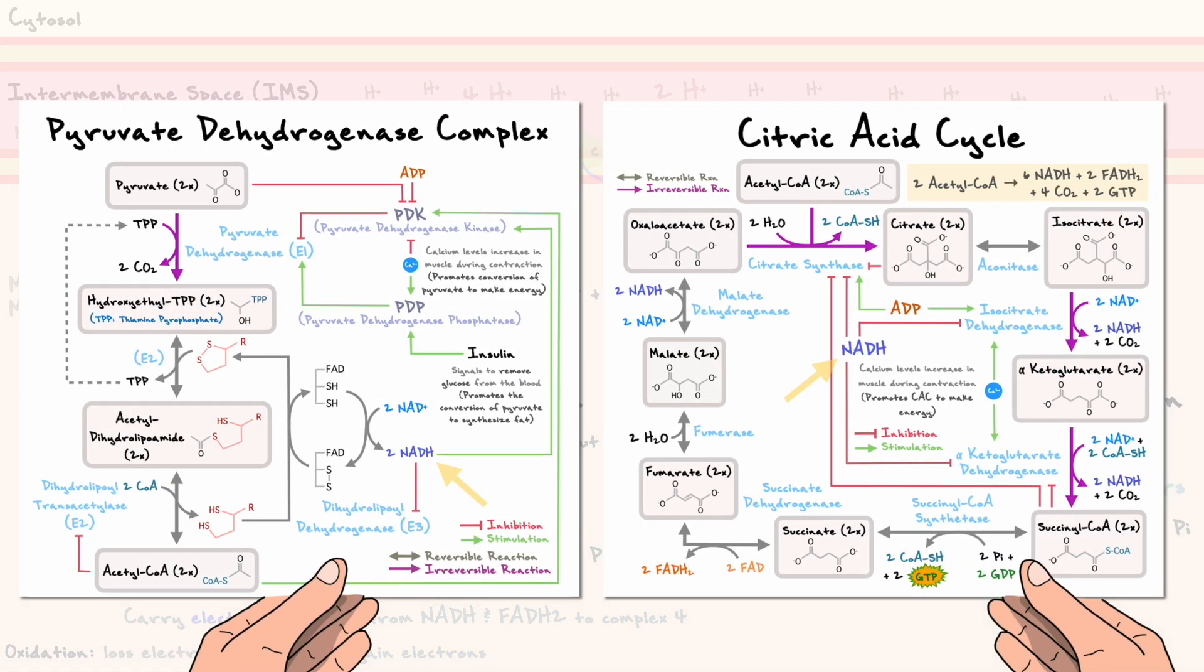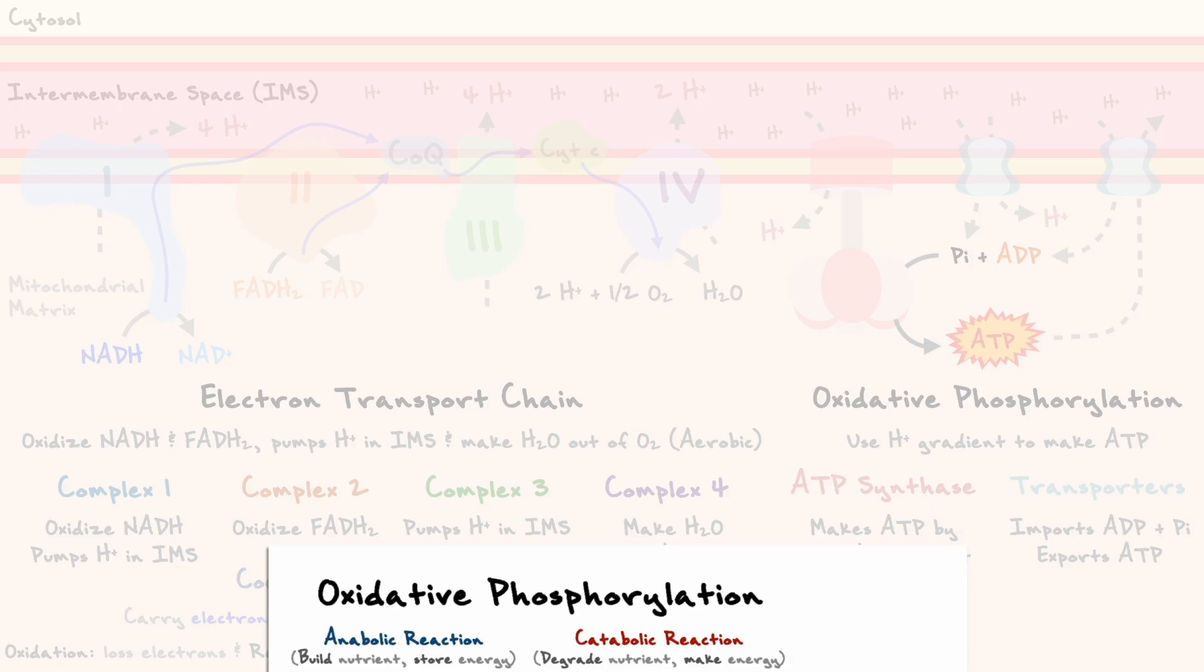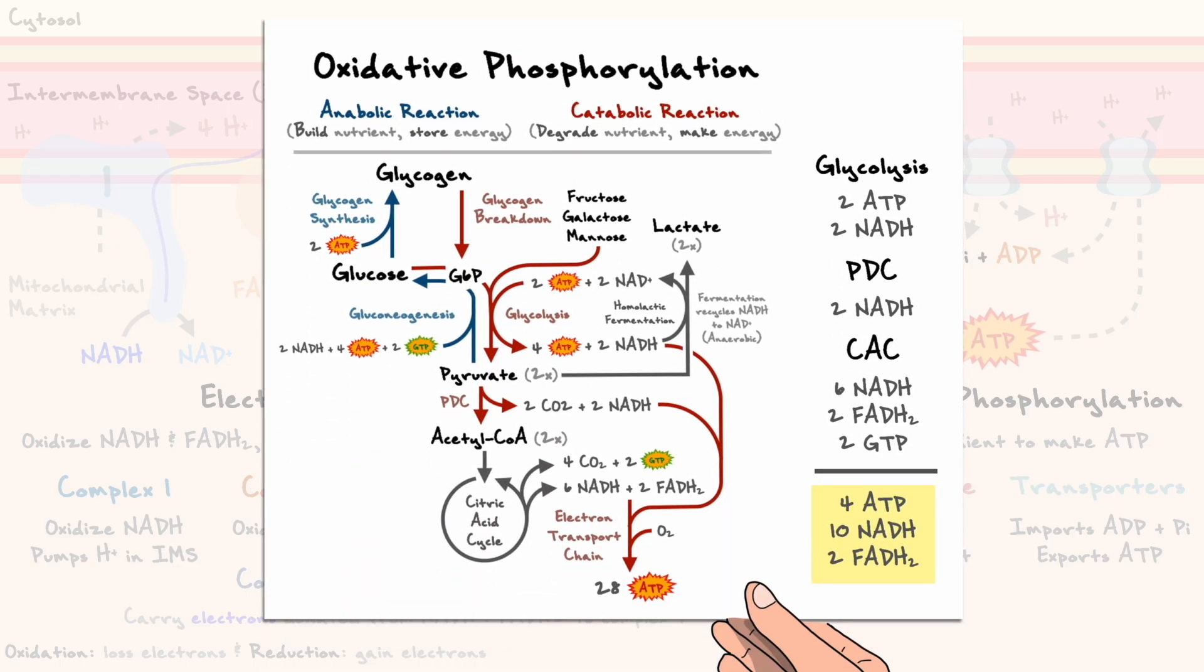For NADH, if you recall the regulation mechanisms of the other pathways, you can see that the production of NADH is already regulated at many instances throughout the degradation of glucose. Since the electron transport chain heavily relies on NADH, its regulation directly impacts the yield of ATP synthase. This should make sense since all the pathways work together to meet the needs of the cell. As such, if the rate of glycolysis is reduced, that will reduce the rate of pyruvate to acetyl-CoA conversion, which will reduce the output of the citric acid cycle and therefore ATP synthesis.